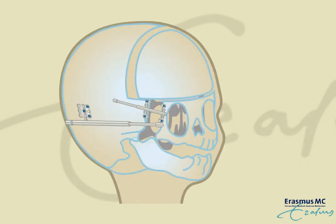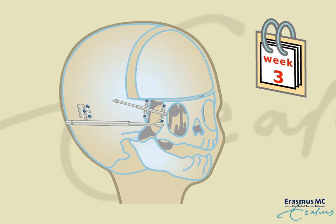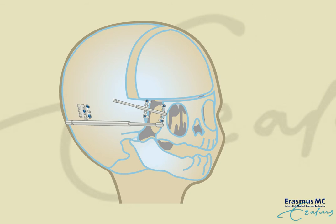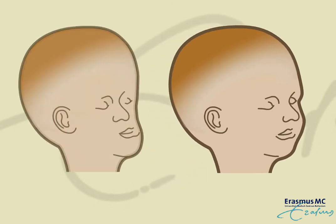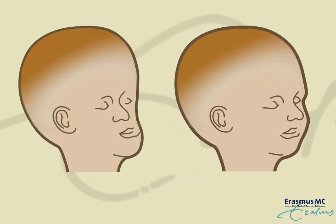The distraction takes about two to three weeks. After a period of three months, the distractors can be surgically removed. The monoblock procedure improves the facial profile, creates more volume for the brain, facilitates eyelid closure and improves occlusion and breathing.